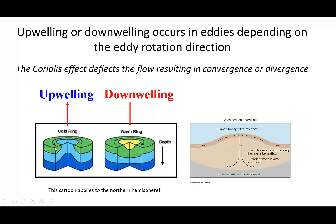If we have an anti-clockwise spinning eddy, the Coriolis effect in the northern hemisphere pushes the water out to the right, away from the axis of the spin. In that case we have divergent flow away from the axis and we have upwelling. So depending on the spin direction of the eddy, we either have downwelling in the core or upwelling in the core.